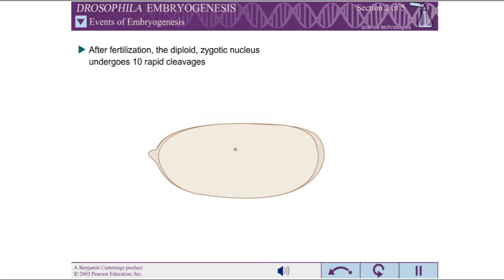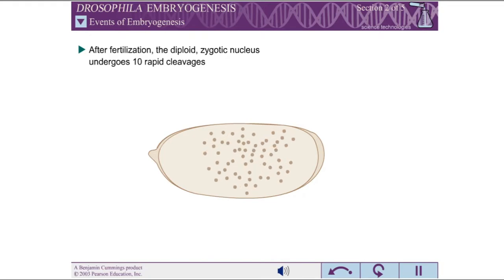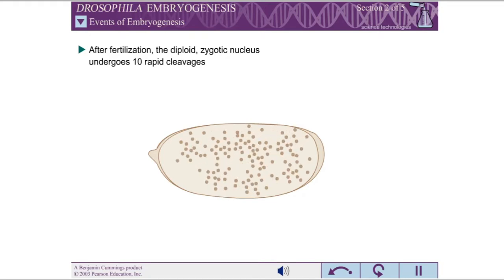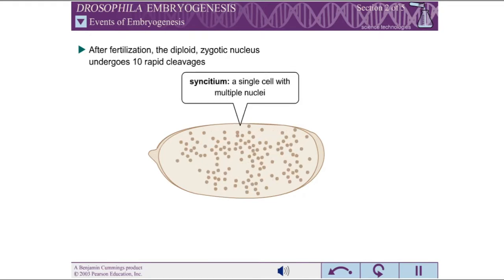After the haploid sperm and egg nuclei fuse, the resulting diploid zygotic nucleus undergoes a series of 10 rapid cleavages within the central yolk regions of the egg. The embryo is called a syncytium at this point because it is a single cell with multiple nuclei.